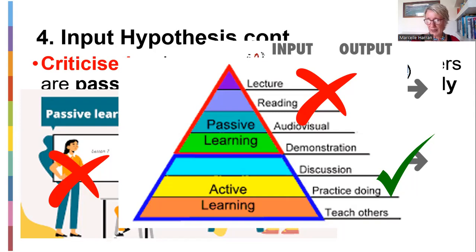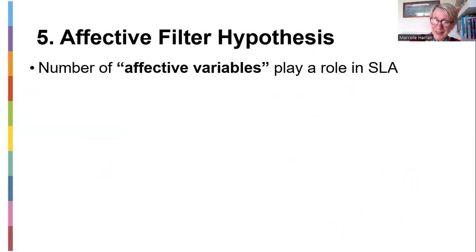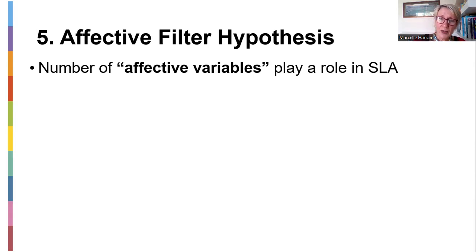The last hypothesis is the Affective Filter. 'Affective' refers to our feelings — motivation, fear, and anxiety. How do these play a role in SLA? If you are a very scary teacher who shouts all the time, your affective filter in the class will be very high. Think back to school — did you learn best with the strict, angry teacher? When a student feels threatened, the affective filter is high and learning is blocked.